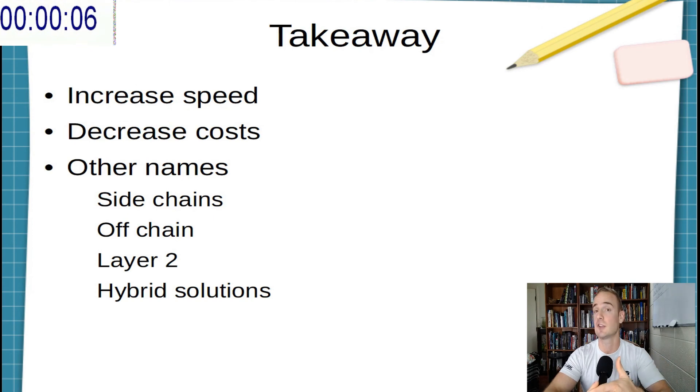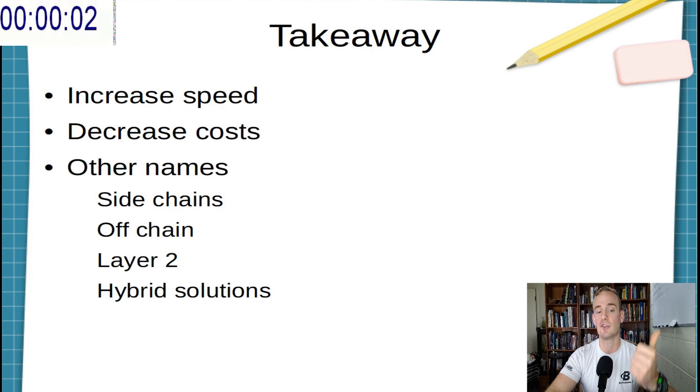The takeaway is that off-chain transactions offer increased speed and decreased costs, and may also be referred to as side chains, off-chain, layer two, or hybrid solutions.